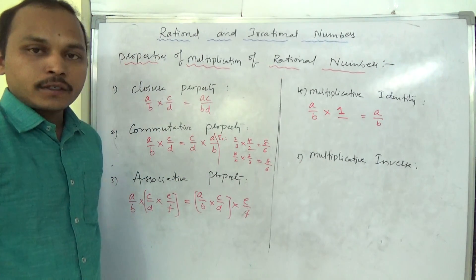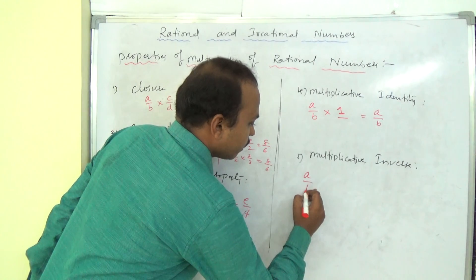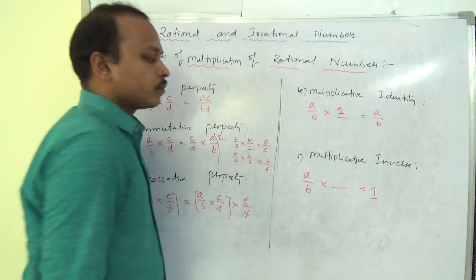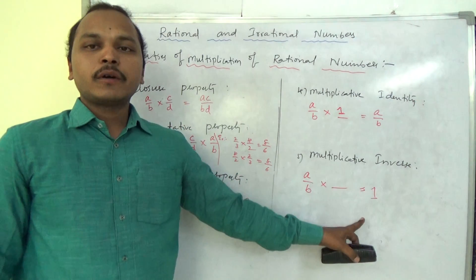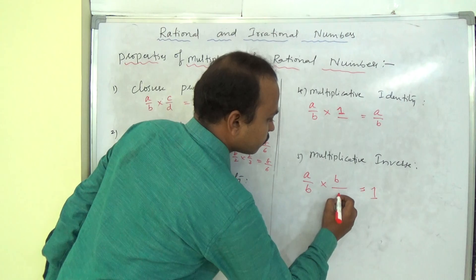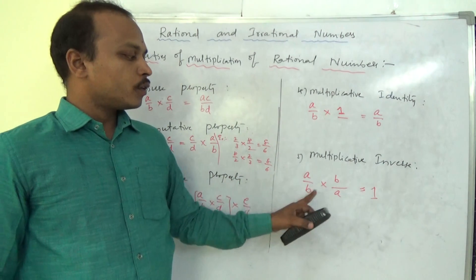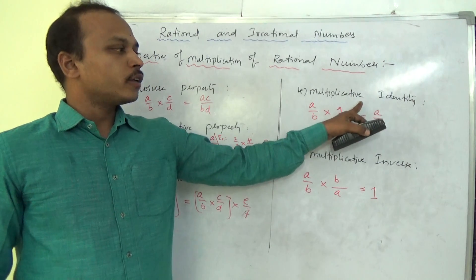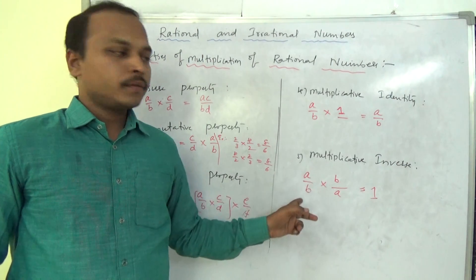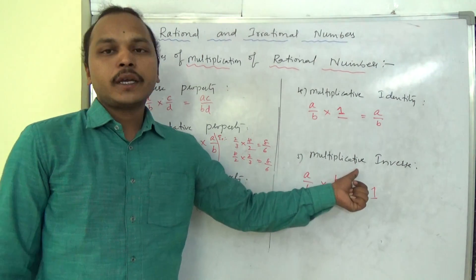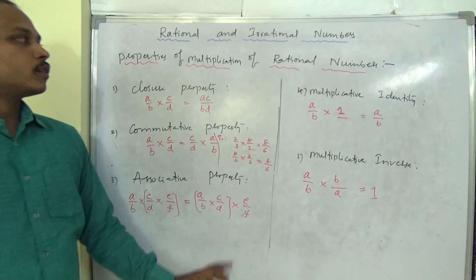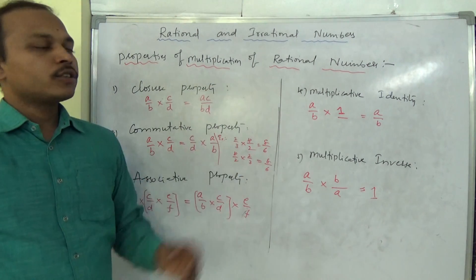Next, we will see multiplicative inverse. For a/b, what should I multiply to get the number 1? The reciprocal of a/b, which is b/a. If I multiply a/b by b/a, we get 1. So the multiplicative inverse is the reciprocal of the rational number. These five are the properties of multiplication of rational numbers.